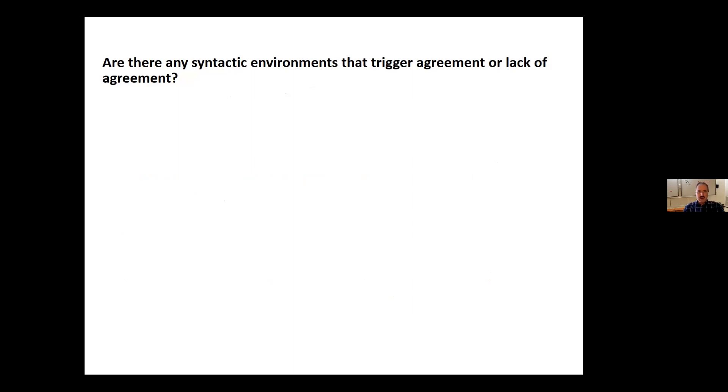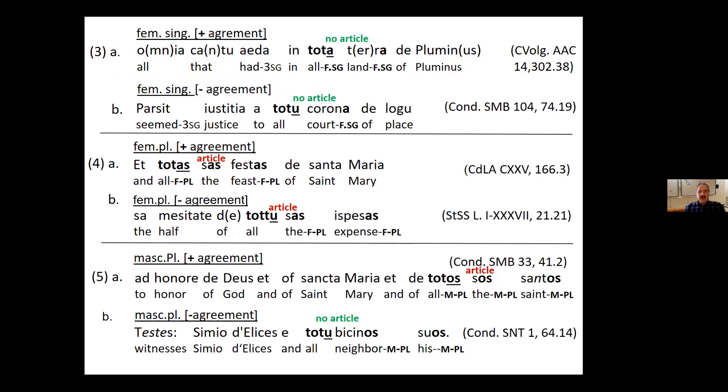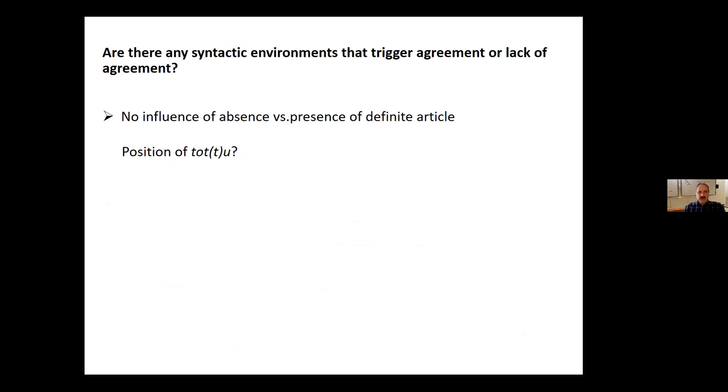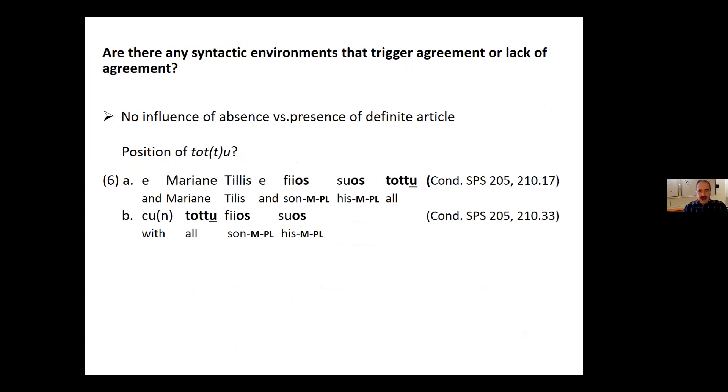Now, are there any syntactic environments that trigger agreement or lack of agreement? Let us look at some possibilities, the presence versus the absence of the definite article. Here are the data that you have already seen, and we see we find both options either with or without an article. So I looked at all the data. There is no correlation between article and agreement. The position of TOTTO in around 20 occurrences of the over 400 occurrences, we find post-nominal TOTTO. So this doesn't yield any explanation either.